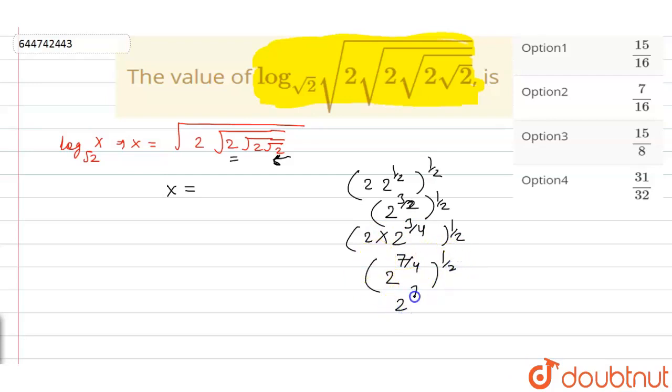That will become 2 to the power 7 upon 8 and now this is multiplied with 2 and again this is 1 by 2 power. So 2 to the power 7 by 8 into 2 will become 2 to the power 15 upon 8 to the power 1 upon 2 will be 2 to the power 15 upon 16. Finally we obtain the value of x as 2 to the power 15 upon 16.